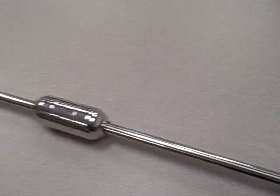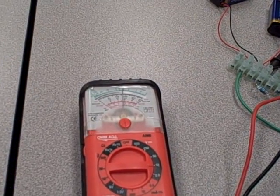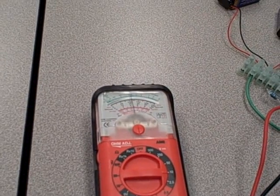If I move the float down the rod, you'll see the meter start to go down in voltage. Move it down, down, and down.